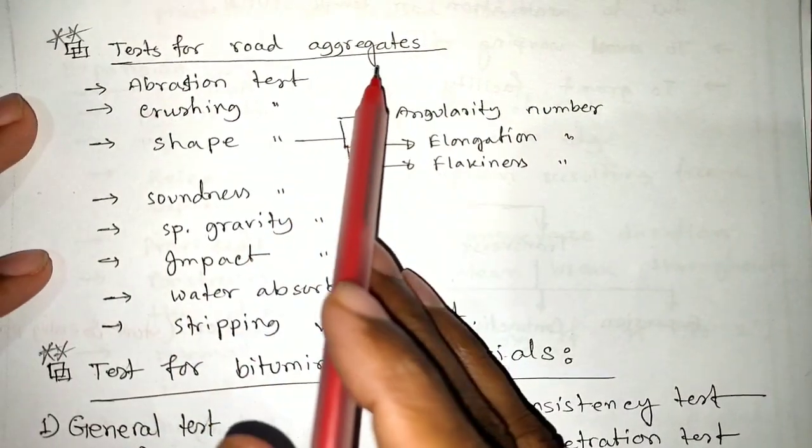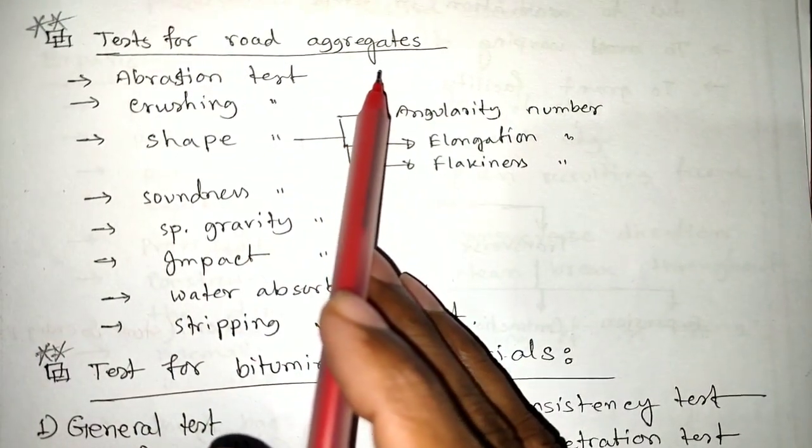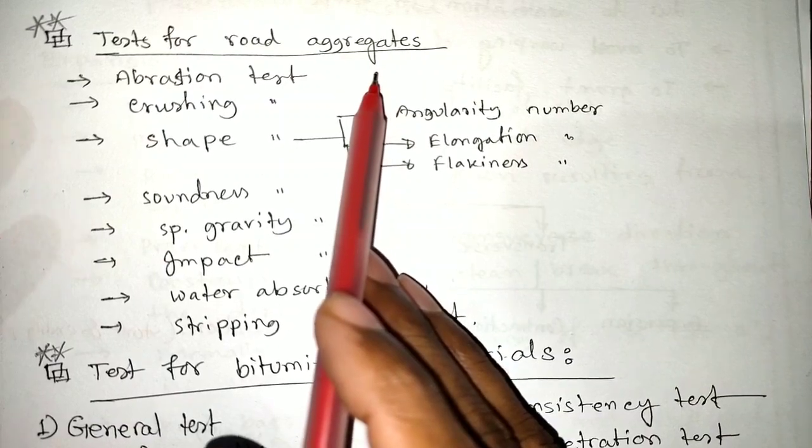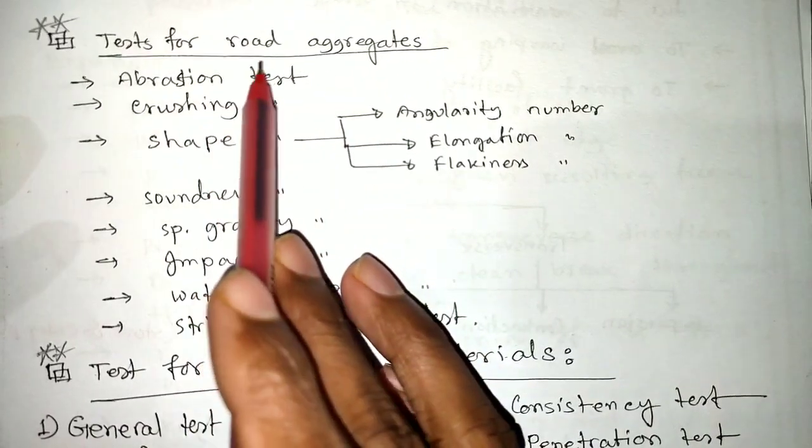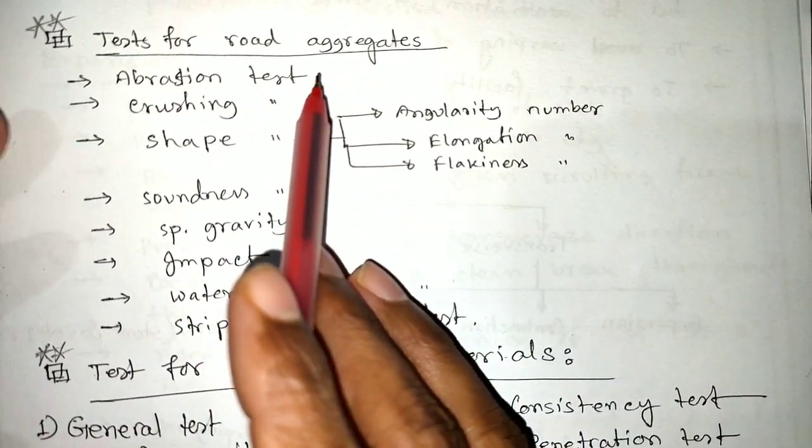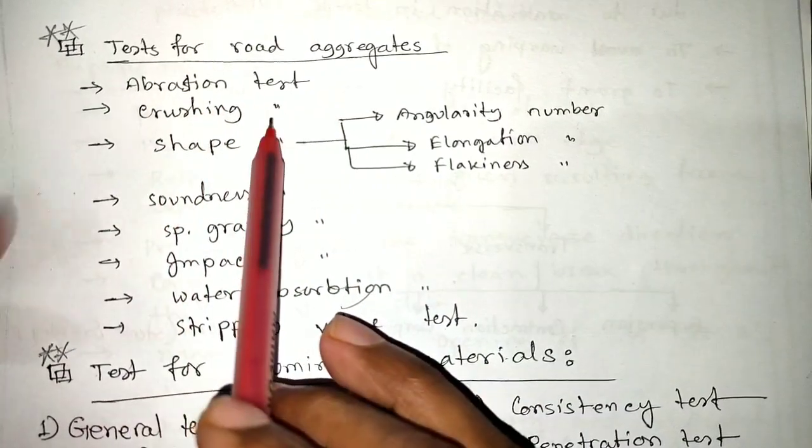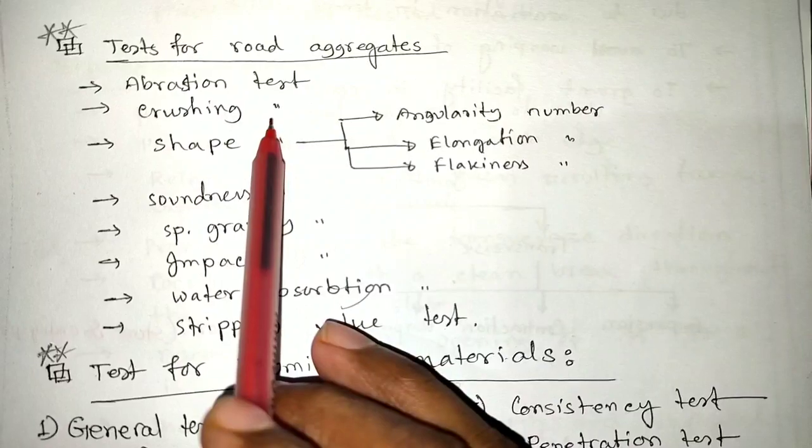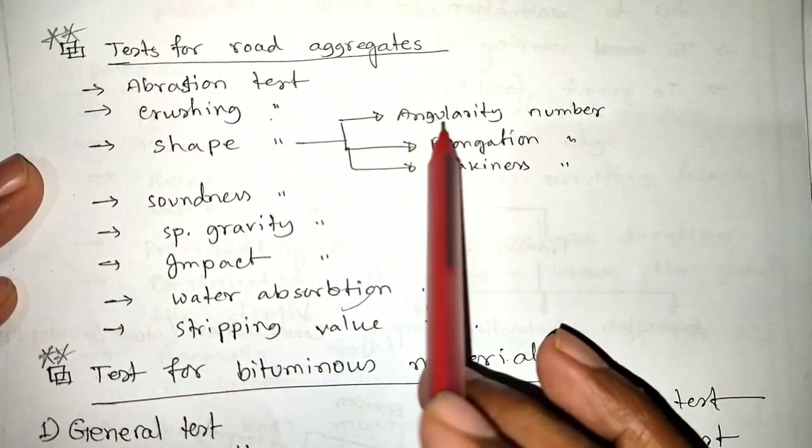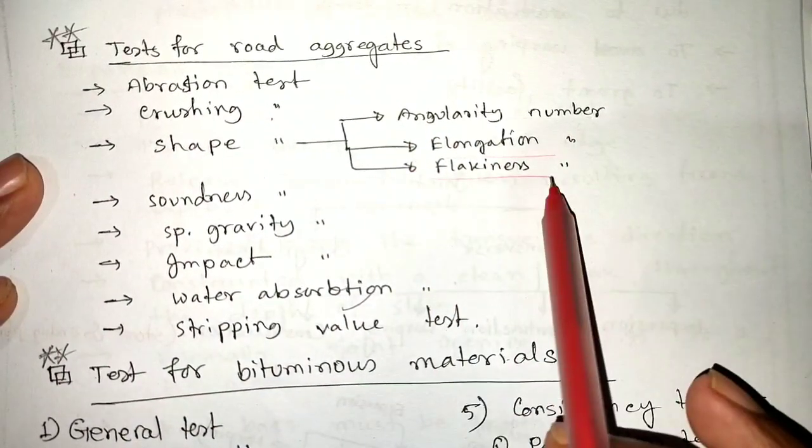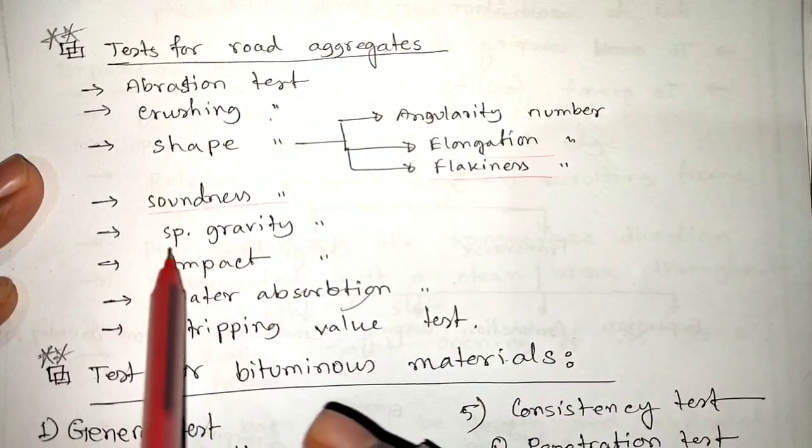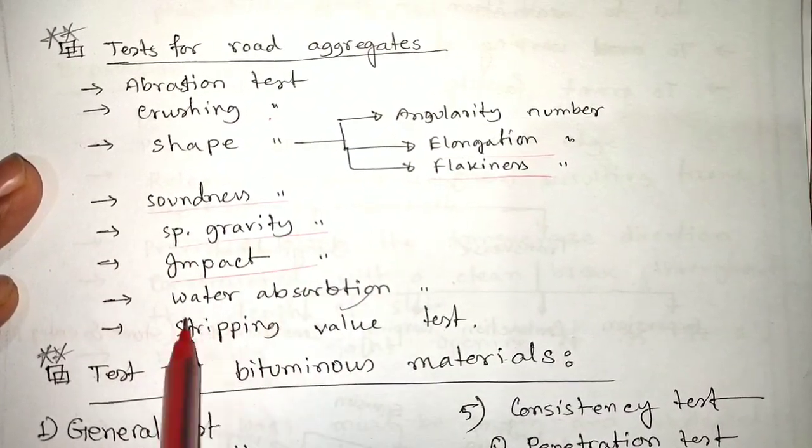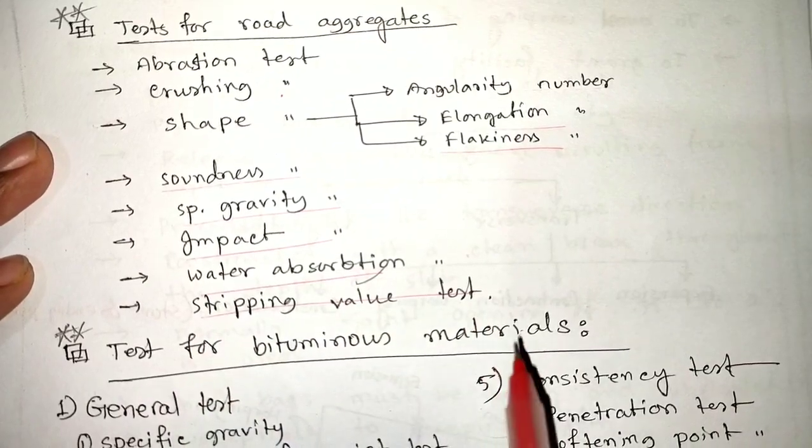For road aggregates, the tests include: abrasion test, crushing test, angularity number, flakiness and elongation, soundness test, specific gravity, impact value, water absorption, and stripping value test.